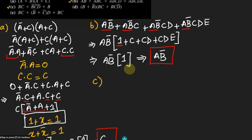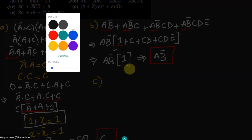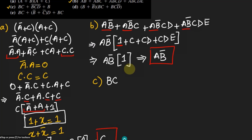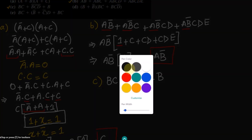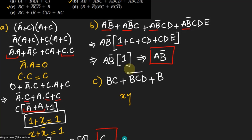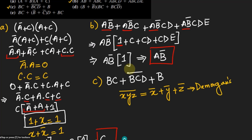In part C we have BC plus BCD whole prime, plus B. Now before proceeding, we have 3 terms and upon these 3 terms we have a whole complement. According to De Morgan's theorem, if we have (x · y · z) whole complement, it equals x complement plus y complement plus z complement. So by using De Morgan's law let me simplify this expression.